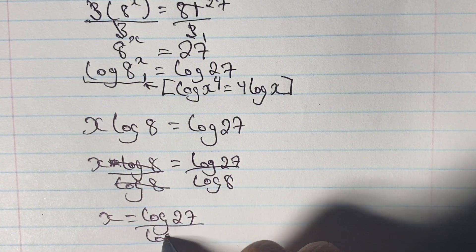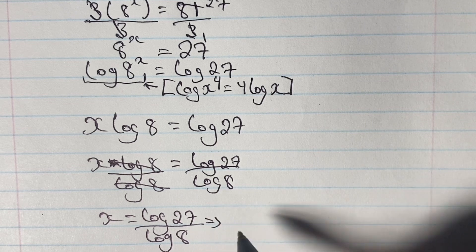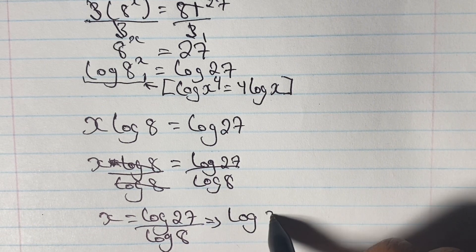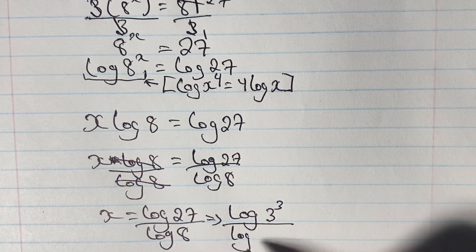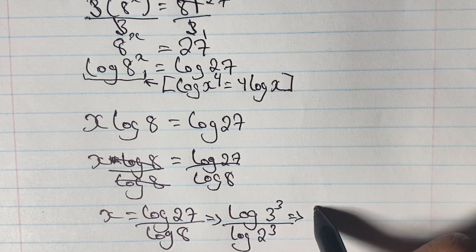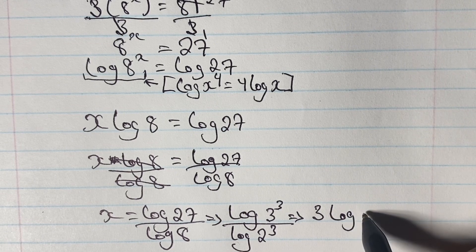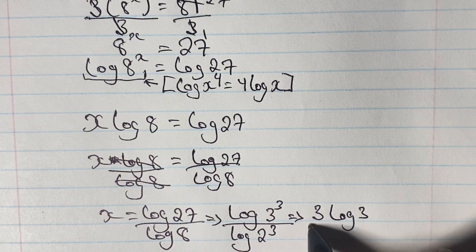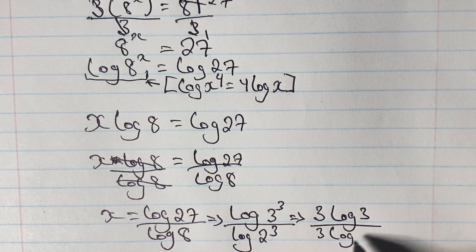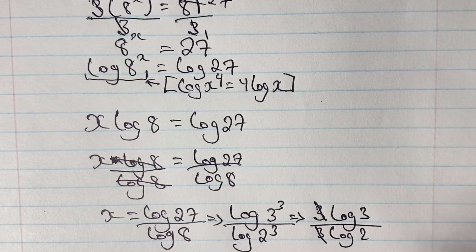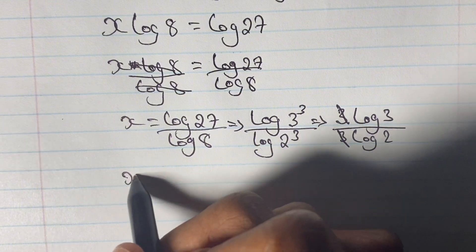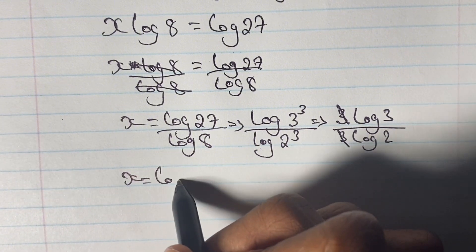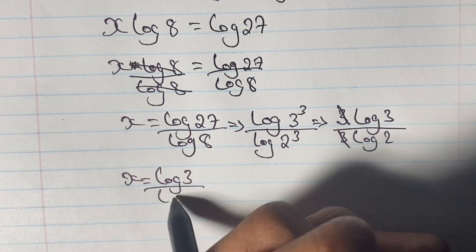We have our answer but we can simplify further. Log 27 is simplified as log 3 to the power of 3, and log 8 is simplified as log 2 to the power of 3. Using our logarithm power rule, this becomes 3 log 3 over 3 log 2. The 3s cancel, leaving us with x equal to log 3 over log 2.